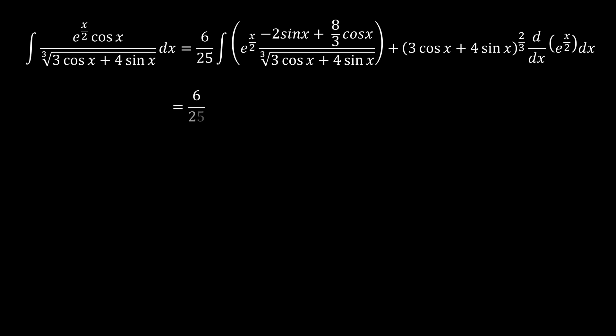And that means that for our integral here, it means that it's 6 over 25 times the integral of the derivative of 3 cosine x plus 4 sine x to the power 2 over 3.